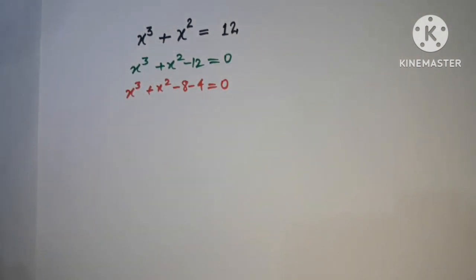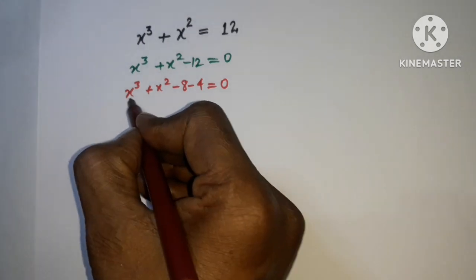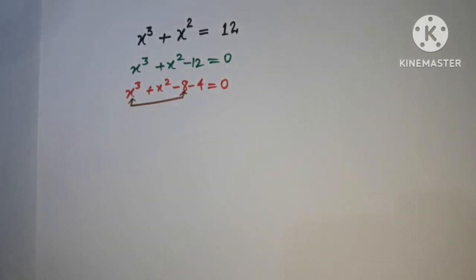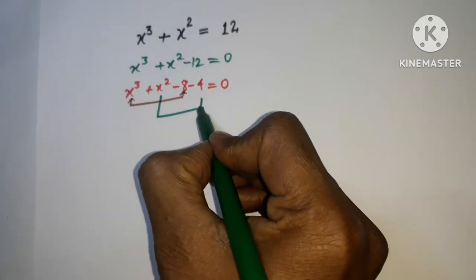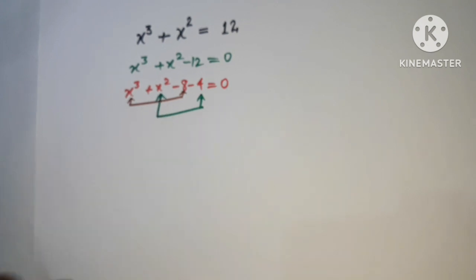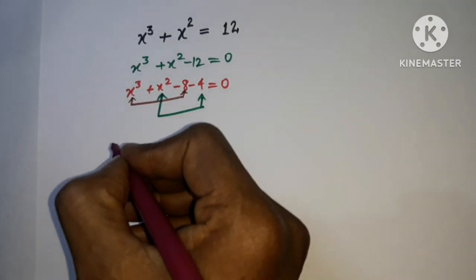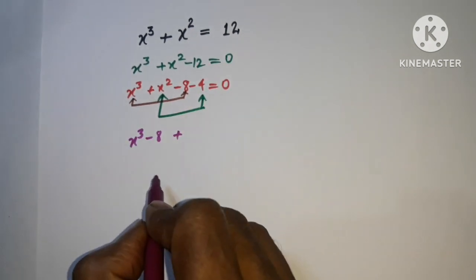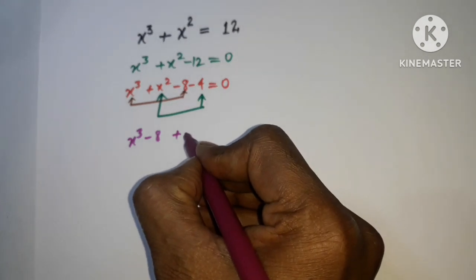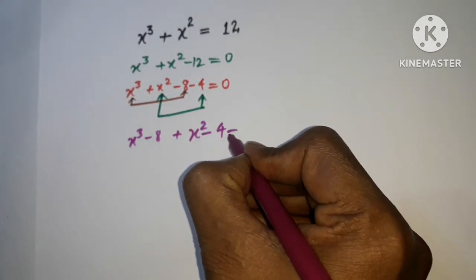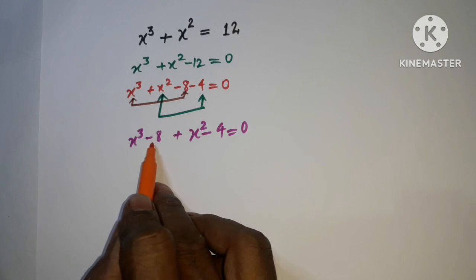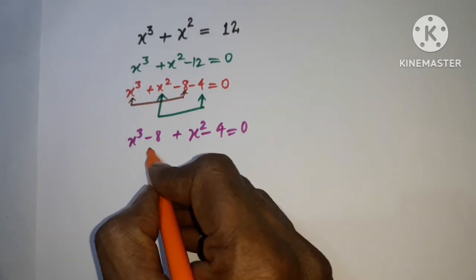Now we group the first term with the third, and the second term with the fourth. These two groupings give us the factors (x³ - 8) + (x² - 4) = 0. Here 8 is the cube of 2, as already noted.